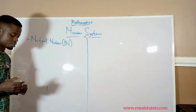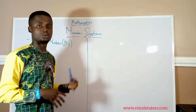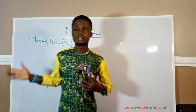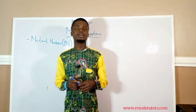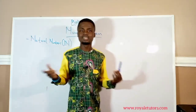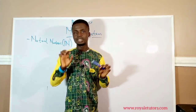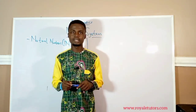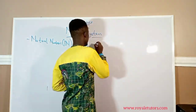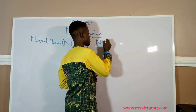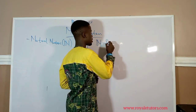Natural numbers are like numbers that came with human nature. They are called natural numbers because it is believed that they were created by God. And what are these numbers? Natural numbers are simply counting numbers. When you want to count, you start from one.